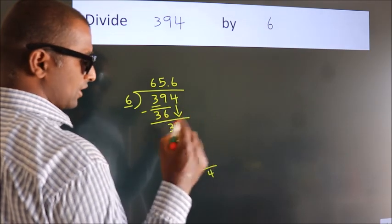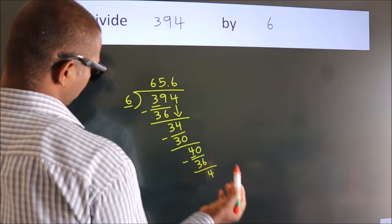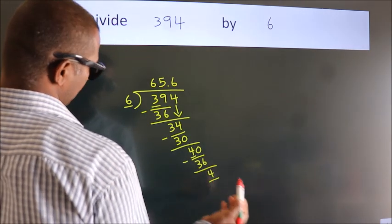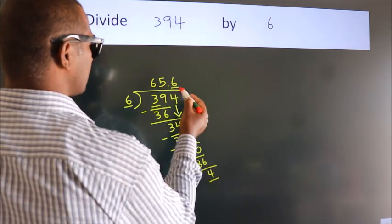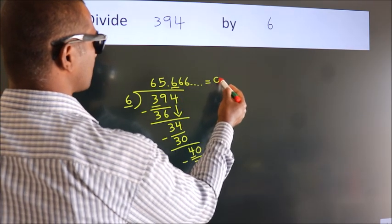Now you observe, we had 4 here and we got 4 again. That means this number keeps on repeating. So this is our quotient.